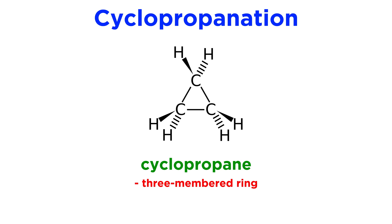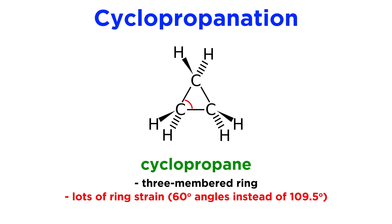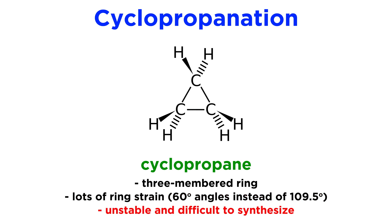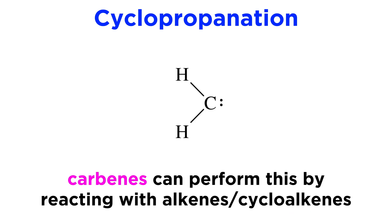Cyclopropane is a three-membered ring which is subject to a lot of ring strain, with the 60-degree bond angles deviating significantly from the 109.5-degree angles that sp3 hybridized carbons prefer. Given the instability of these compounds, they are difficult to synthesize. But carbenes offer a relatively simple method of doing so, by reacting them with alkenes or cycloalkenes.